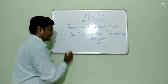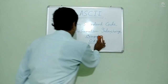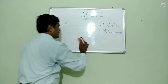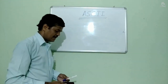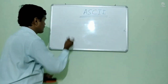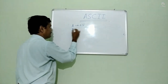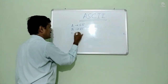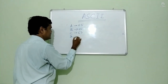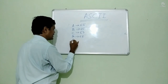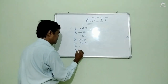In ASCII code we have: capital A is 65, capital B is 66, capital C is 67, capital D is 68, capital E is 69, capital F is 70.